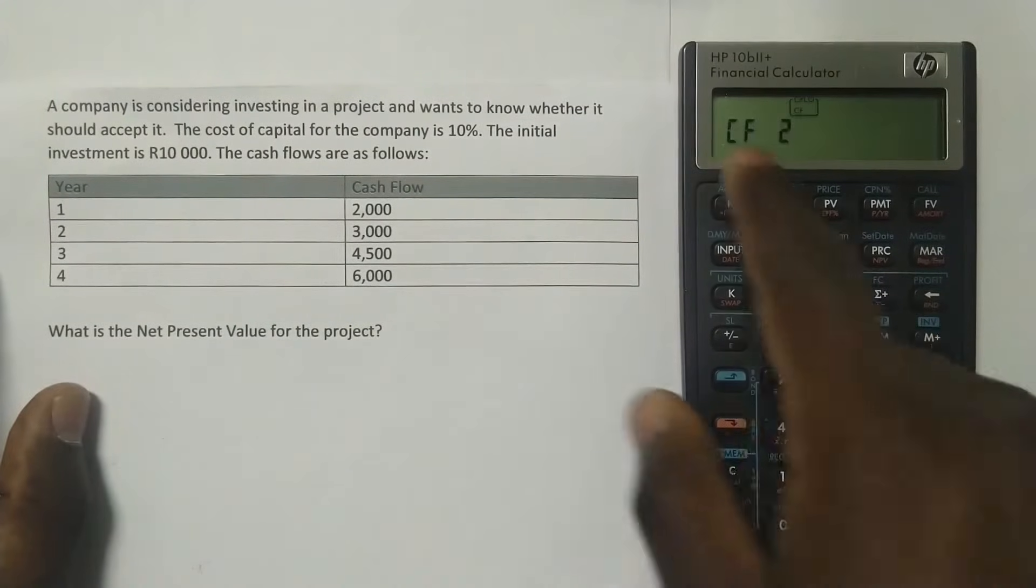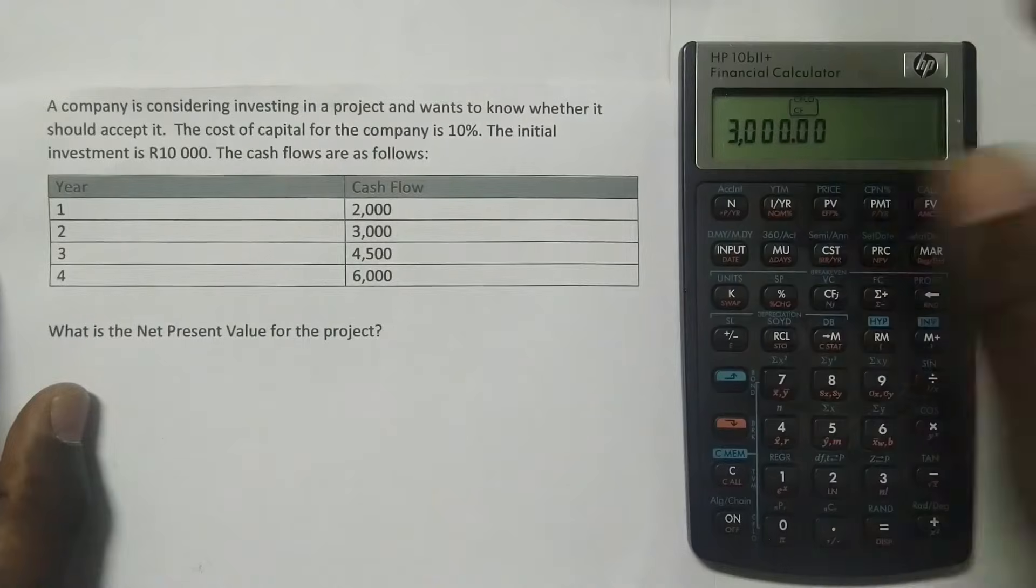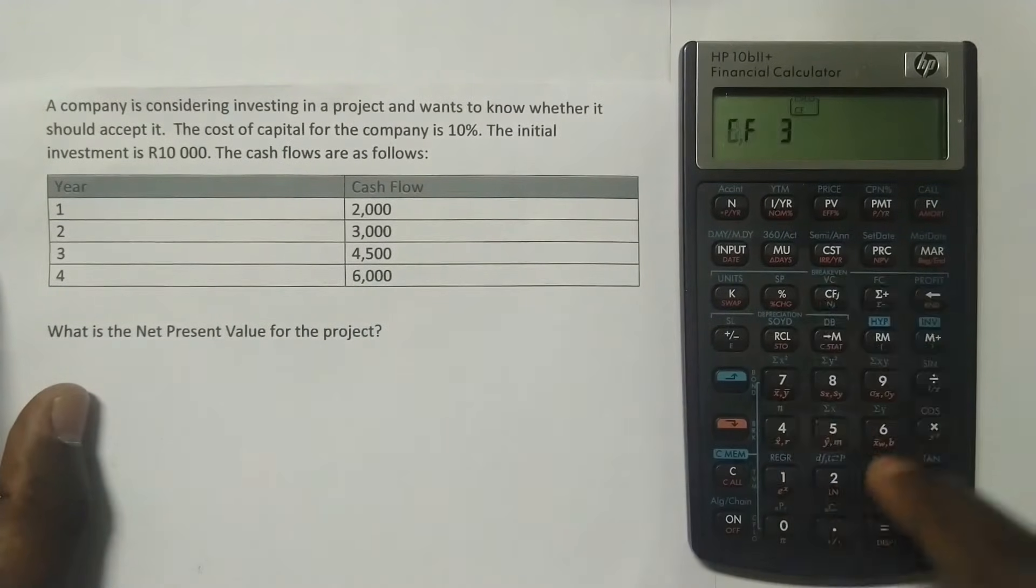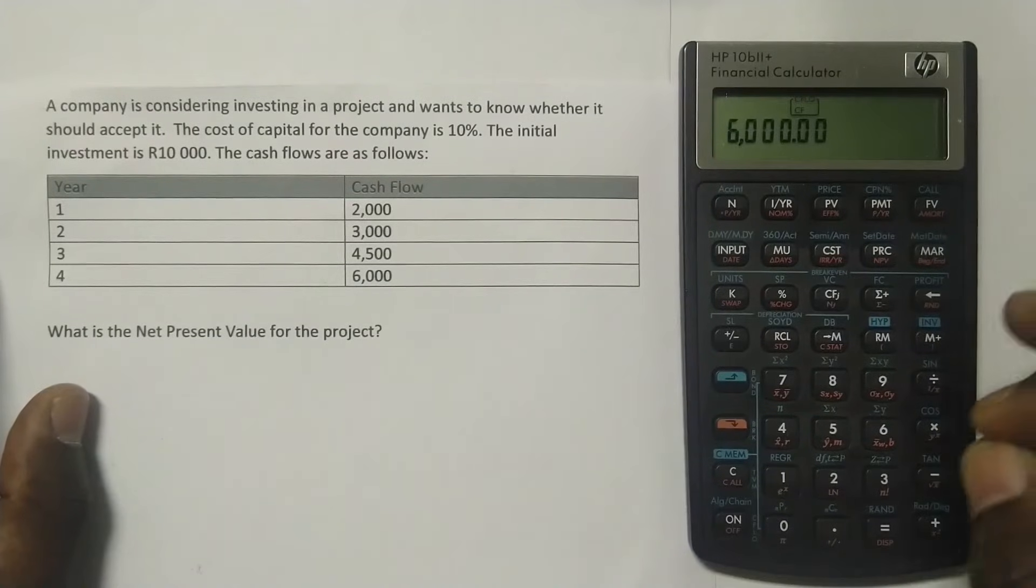You can see it's showing which year that cash flow belongs to, which is second year. And then 4,500 at year 3, CFJ, and then 6,000 rand at year 4, CFJ. And now we have put in all the cash flows that we needed to put in.